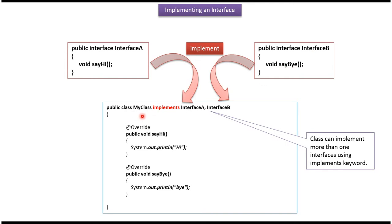Here you can see my class which implements interface A and interface B. So my class should provide implementation of sayHi method and sayBy method. Here it provides implementation of sayHi method and sayBy method.